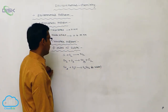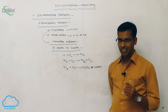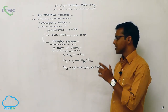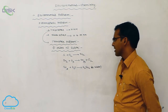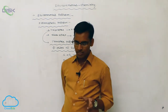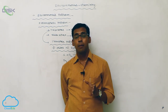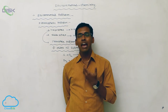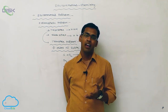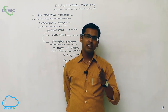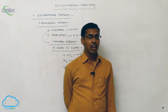So, sulfur reacts with oxygen to form sulfur dioxide; this sulfur dioxide reacts with ozone present in the stratosphere to form sulfur trioxide; sulfur trioxide dissolves in water to produce sulfuric acid. Sulfur dioxide mainly causes asthma and bronchitis, and mainly affects the respiratory system in children and human beings, causing many types of diseases in living organisms.